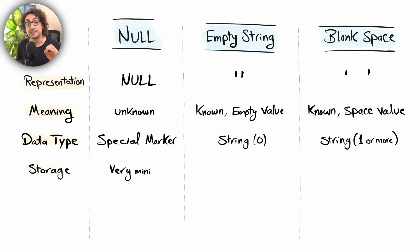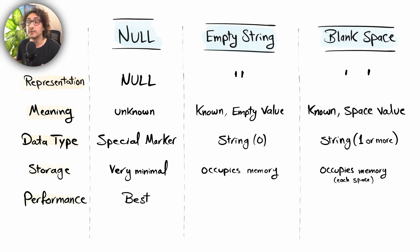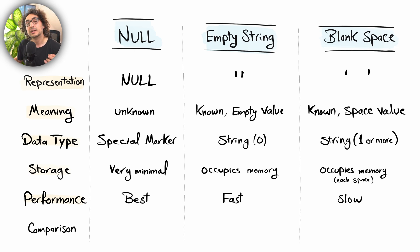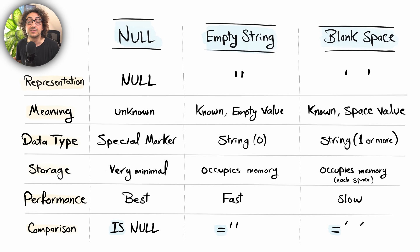Regarding storage: NULL is the best option — it doesn't consume much storage, while empty strings and blank spaces both occupy storage and waste space. For performance: NULLs give the best performance, empty strings are also fast but not as fast as NULLs, and blank spaces are the worst option. For comparison and searching: to find NULLs you must use IS NULL, while to find empty strings or blank spaces you use the equals operator.